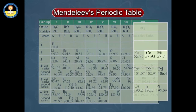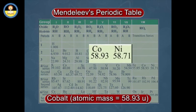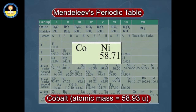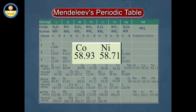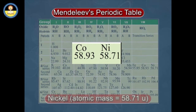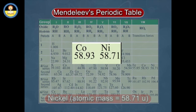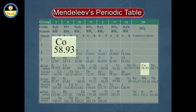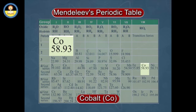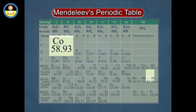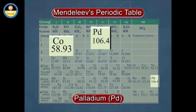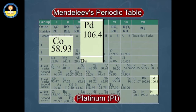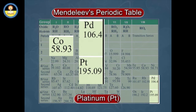For example, cobalt having atomic mass 58.93 unified mass was placed before nickel having atomic mass equal to 58.71 unified mass, because the properties of cobalt (Co) were similar to those of palladium (Pd) and platinum (Pt).